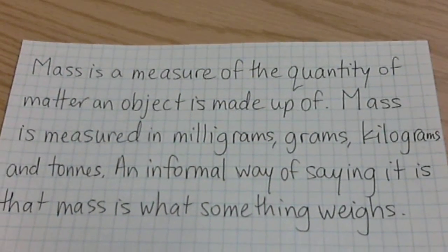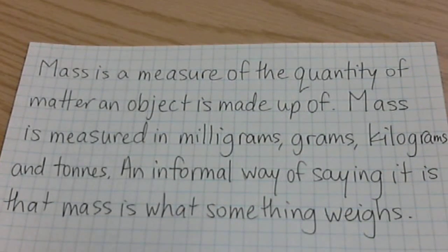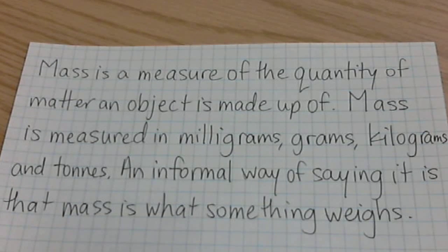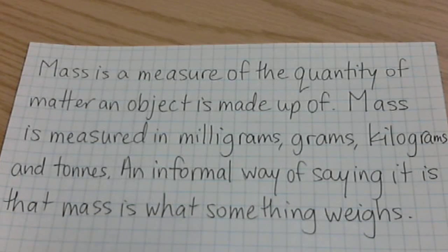The third definition is mass. Mass is a measure of the quantity of matter an object is made up of. Mass gets measured in milligrams, grams, kilograms, and tons as well. Basically, when we talk about mass, we say it's what something weighs — how much of something there is. Since we live in Canada, we talk about someone weighing a certain number of kilograms.